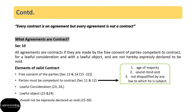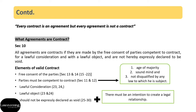Fifth, the agreement should not be expressly declared as void — because if the agreement is void, then the contract will be void ab initio, that is, it will be void from the very beginning. The conditions under which a contract is void are dealt with under Sections 25 to 30. Plus, there is another additional condition for a contract to be valid: the parties must have an intention to create a legal relationship.